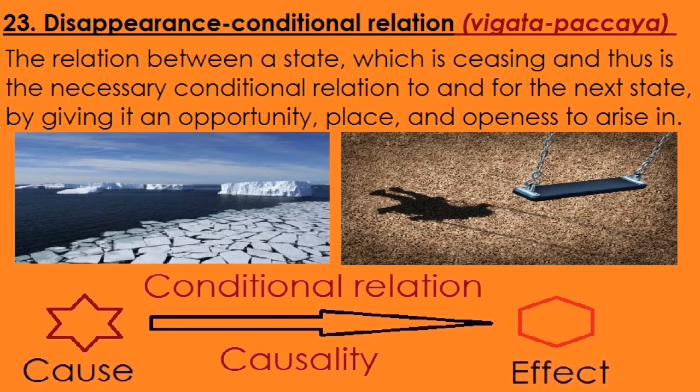Number 23 is the disappearance conditional relation — Vigata Pachaya. Something has to go before something else can come. It's the relation between a state which is ceasing and thus forms the necessary conditional relation for the next state, by giving it an opportunity, a place, an openness to arise in. For example, ice melting gives space for other ice to form there. And it's because a child has jumped off the swing that another child can sit on it. The effect can first come into being when something is disappearing.